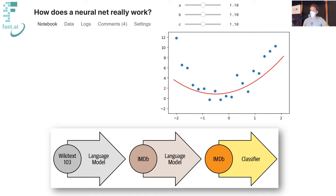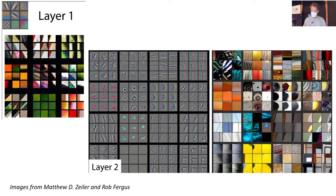We have a professor from University of Queensland, John Williams, joining us to ask the highest-voted questions from the community. John asks: how do you go from a model trained to predict the next word to a model that can be used for classification? We will be getting into that in more detail. A good place to start is by recalling lesson one, where we looked at the Zeiler and Fergus paper with visualizations of the first layer of an ImageNet classification model.